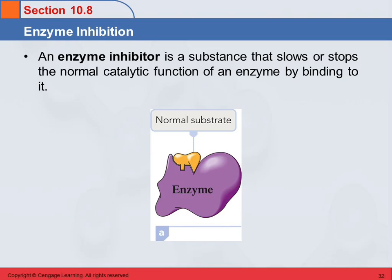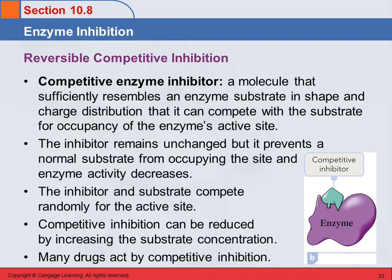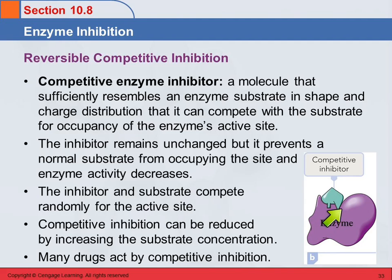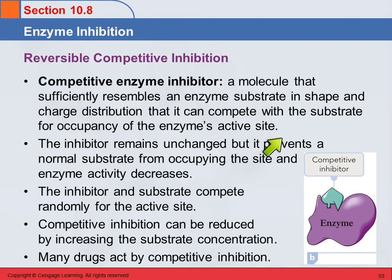What can happen to mess that up? There's something called reversible competitive inhibition. This is where you have another molecule that resembles the enzyme substrate enough that it can come in and bind to the active site. This competitive inhibitor is similar enough to the actual substrate that it can bind to the enzyme active site, even though it's not a substrate — it's not going to undergo a reaction. It won't stay there forever; it'll come in and then go out again. The next molecule that comes in may be the inhibitor or it could be an actual substrate, so the inhibitor molecules and substrate molecules compete randomly for the active site.